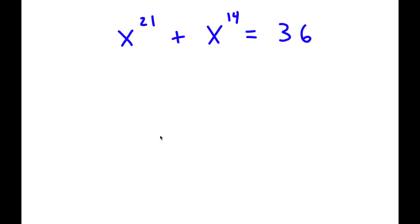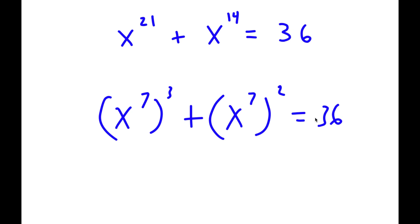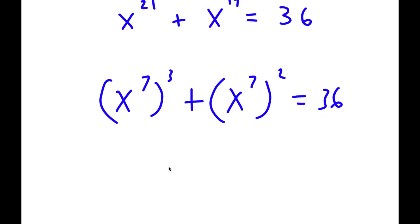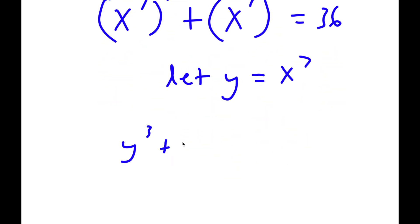In this problem, I have x to the power of 21 plus x to the power of 14 is equal to 36. I'm going to first rewrite x to the power of 21 as x to the power of 7 to the power of 3, and x to the power of 14 as x to the power of 7 to the power of 2. Now I'm going to let the variable y equal x to the power of 7. So now I have y to the power of 3 plus y to the power of 2 is equal to 36.